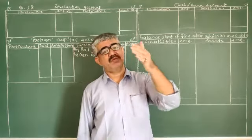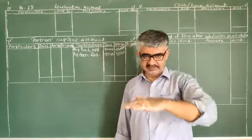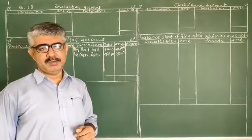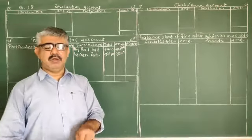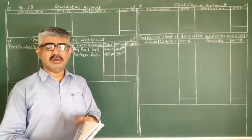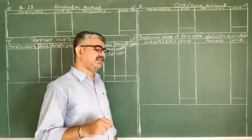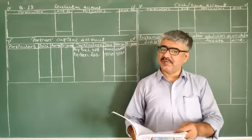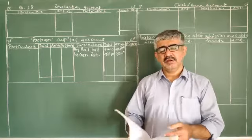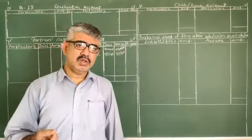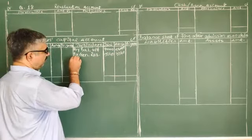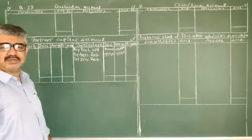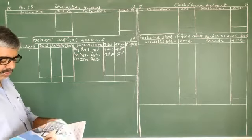But if the value of investment decreases, we use the investment reserve to cover the deficit. Here, the book value of investment is 63,000 and the market value is 68,950, so the value has increased. Therefore, no need to use the investment reserve — distribute it entirely to the partners. Investment Reserve of 4,200 distributed in ratio 3:2: Jaini gets 2,520 and Anya gets 1,680.